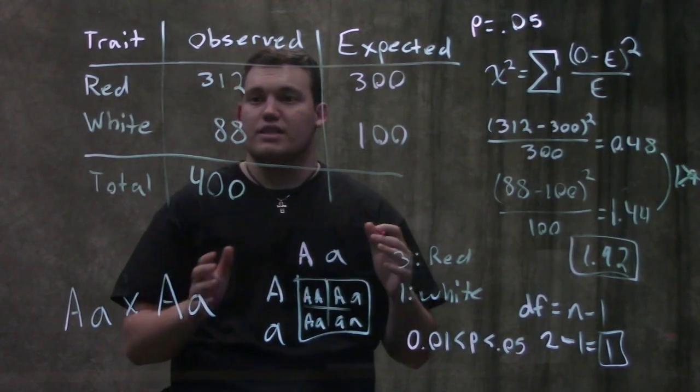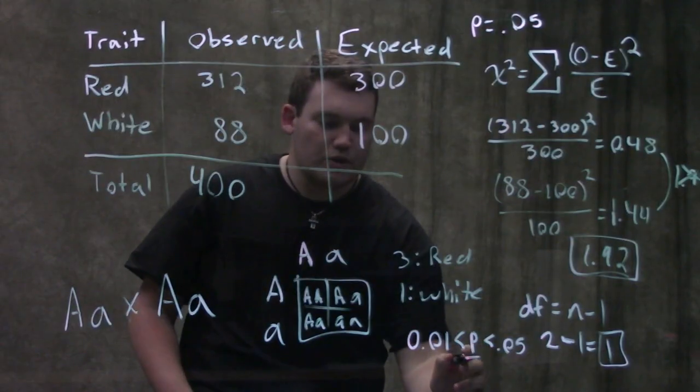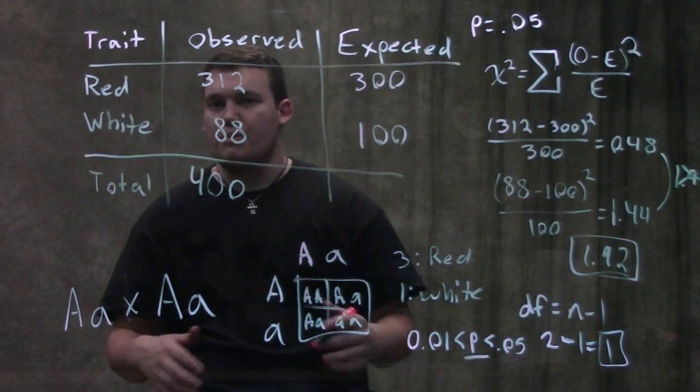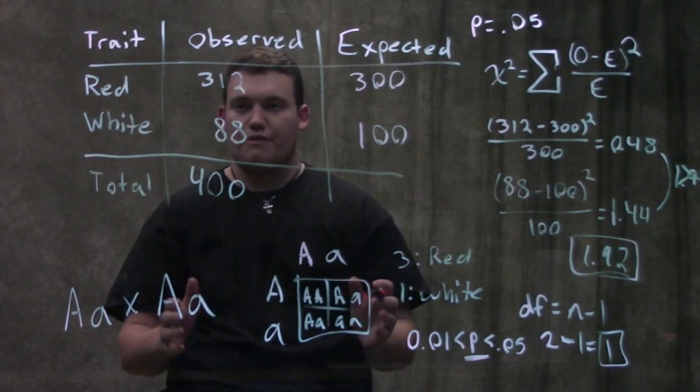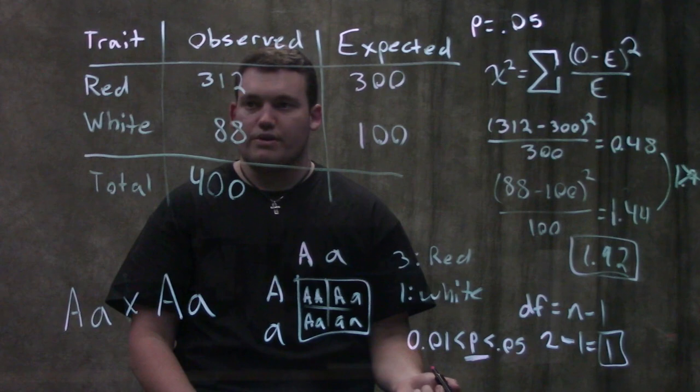So we said we were gonna use a p-value of 0.05. So if our value is less than 0.05, which for this one, I don't actually have a table in front of me, we're just gonna assume I do. For this one, we decided our p-value here, whatever we found on our table, is less than 0.05.